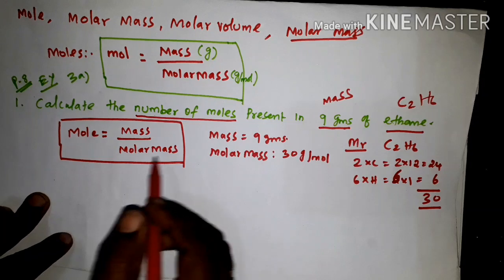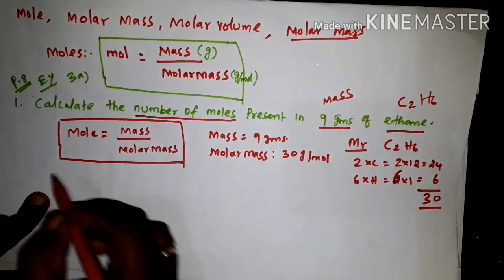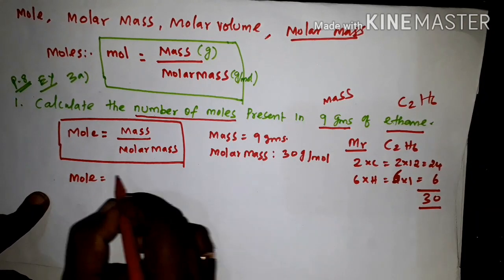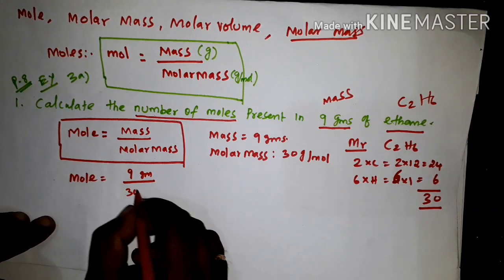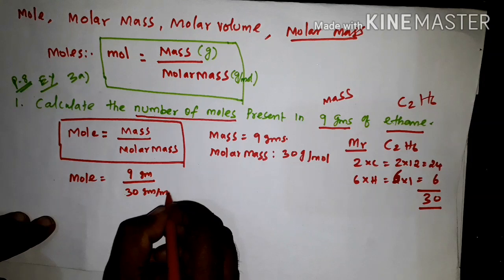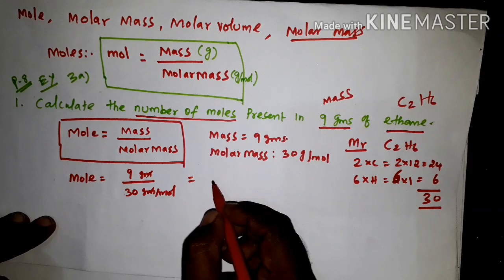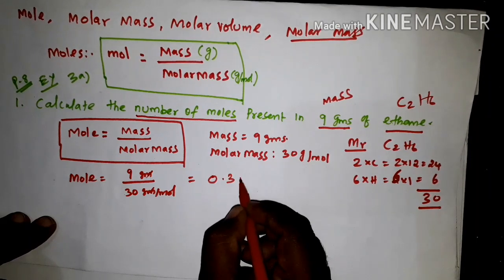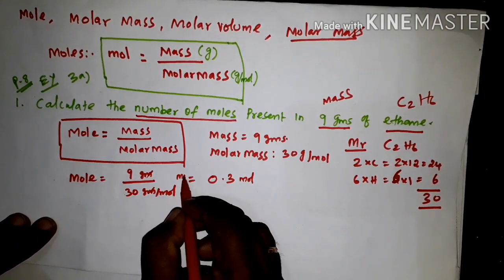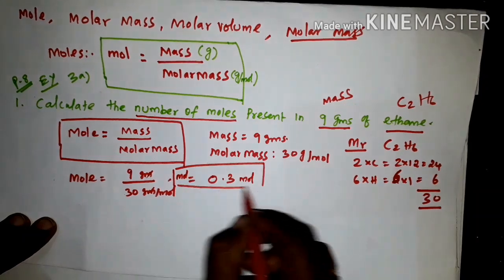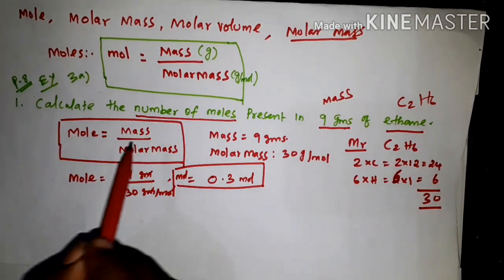Now we can easily calculate by substituting mass and molar mass. Moles equal to 9 grams divided by 30 gram per mole. The gram units cancel, and 9 divided by 30 gives 0.3 mole. So the answer is 0.3 mole.